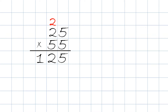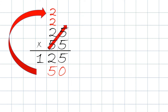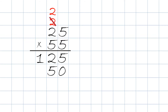We put a 0 right up here for the next row. Next we take 5 times 5 and once again the answer is 25 — we only put the second digit which is 5, and the 2 we carry on top, crossing out the previous 2 because we don't need it. Then we take 5 times 2 plus the carried 2: 5 times 2 is 10, plus 2 will be 12.